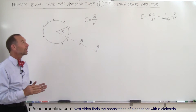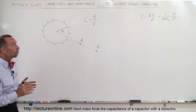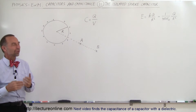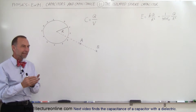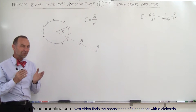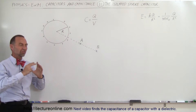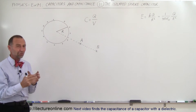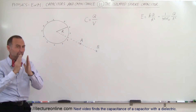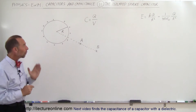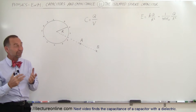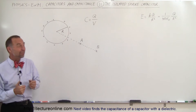Welcome to Electronline. Now let's take a look at what we call an isolated sphere capacitor. Typically a capacitor has two plates — it could be a cylinder with an inner and outer cylinder, an inner and outer sphere, or two parallel plates. But what about a single sphere? Can that be a capacitor? And the answer is yes, it can be.